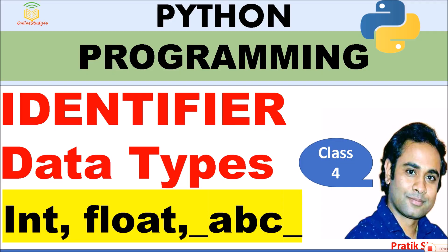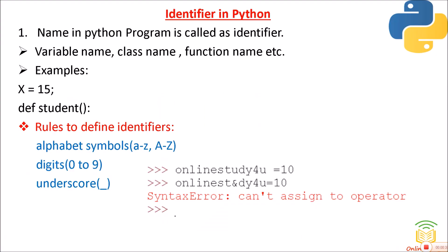So what are identifiers in Python? Any name in a Python program is called an identifier. Variable names, class names, function names, etc. will all be called identifiers. For example, x = 15 — here x is a variable, and x is an identifier.